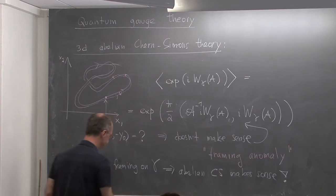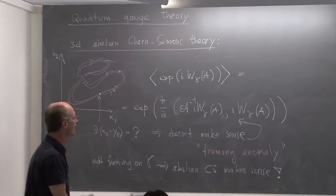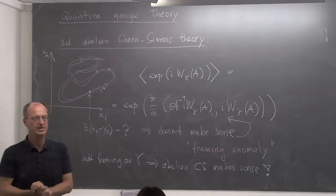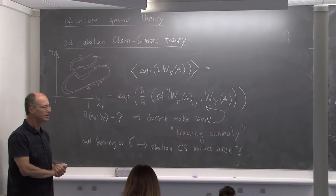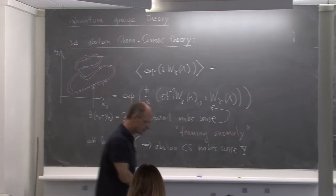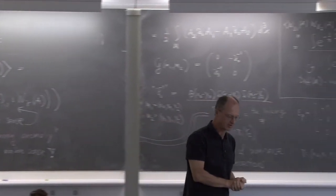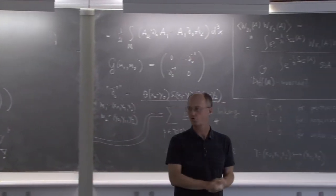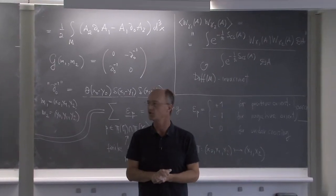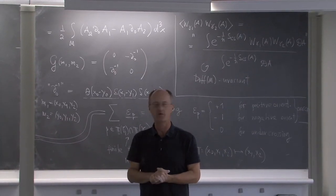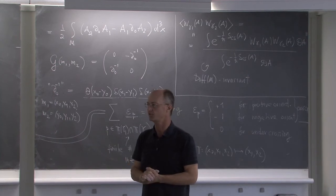This is an interesting phenomenon: the quantum theory tells you what geometry it needs. You cannot just put in a curve and define a Wilson line; you have to equip it with a framing. Once equipped with a framing, such expressions start making sense. I wanted to show one more example but probably not today. Next Thursday will be about non-Abelian gauge theory, primarily non-Abelian 3D Chern-Simons.